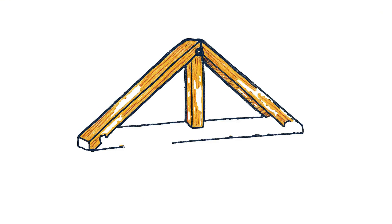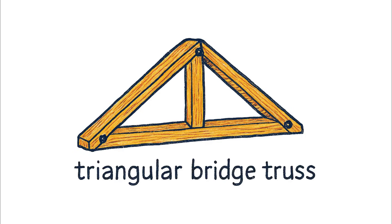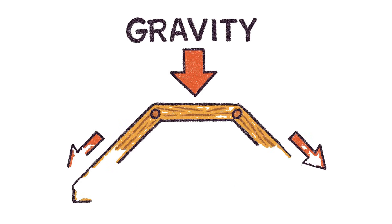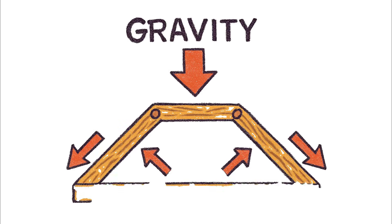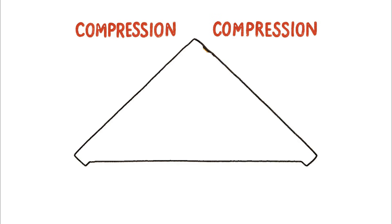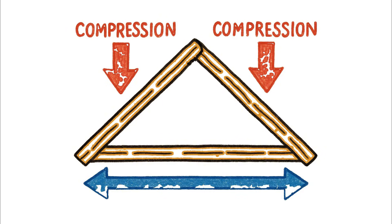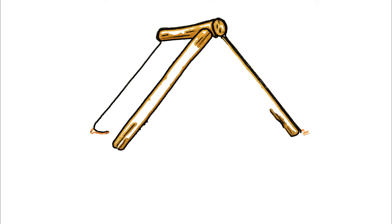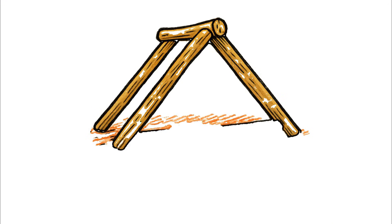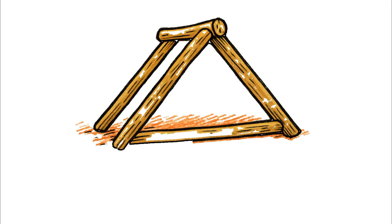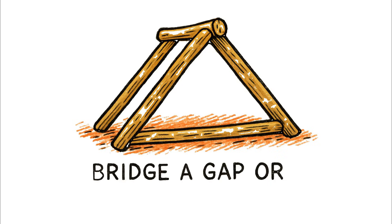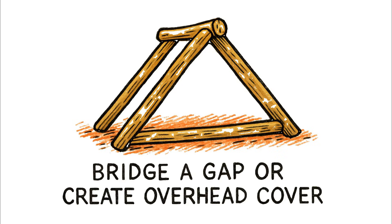Imagine a simple triangular bridge truss. As gravity pushes down on the top, that force is channeled down the angled sides. Those angled beams are put into compression, pushing outward, while the bottom beam connecting them is pulled taut, holding everything in tension. This lets you bridge a gap or create overhead cover using much lighter, smaller pieces of wood instead of one massive heavy log that you could never lift.